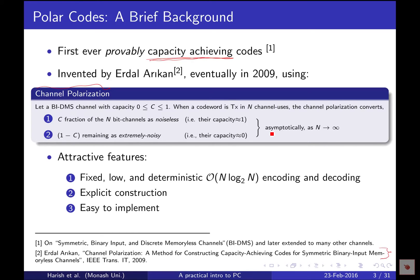We transmit c fraction of bits as message bits, and the remaining fraction of bit channels are used for frozen bits — effectively transmitting nothing useful. It's important to remember this is an asymptotic phenomenon. At finite block lengths things differ: there will be very good channels, average channels, bad channels, and worst channels — a grey area. But asymptotically this is what happens. Interested readers can start with the original paper, which explains this polarization phenomenon information-theoretically.